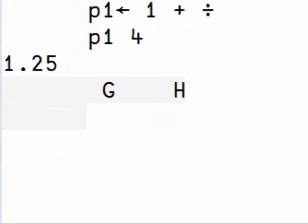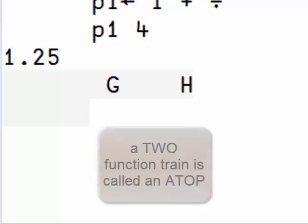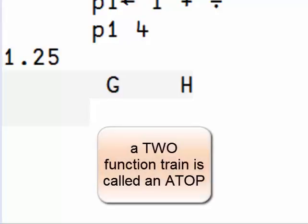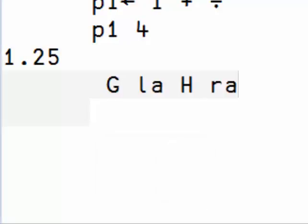A train can also come into a two-function form, called an ATOP. The rule is, the arguments are given to the right-hand function, and its result is given to the left-hand function. So in this case, 2 and 3 are given to the h function, and its result is given to the left function.